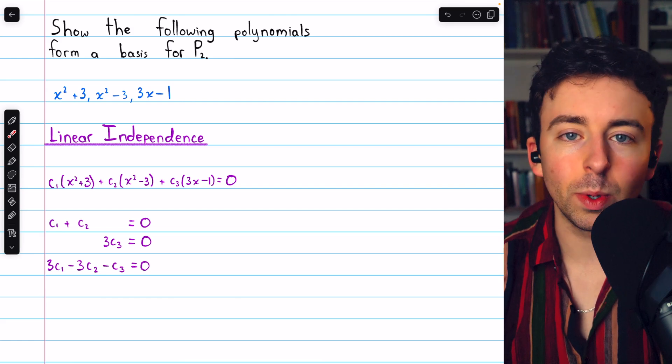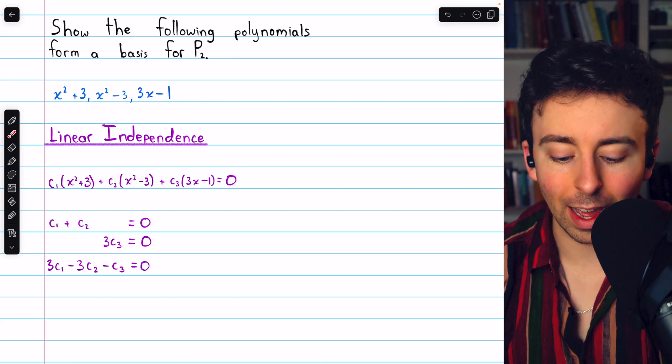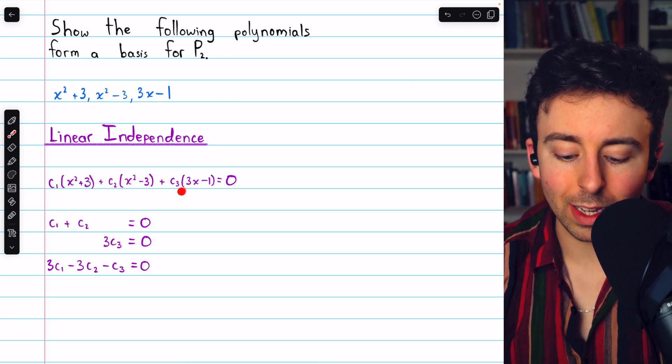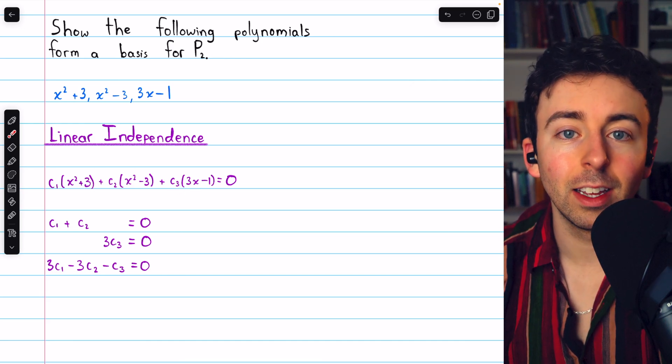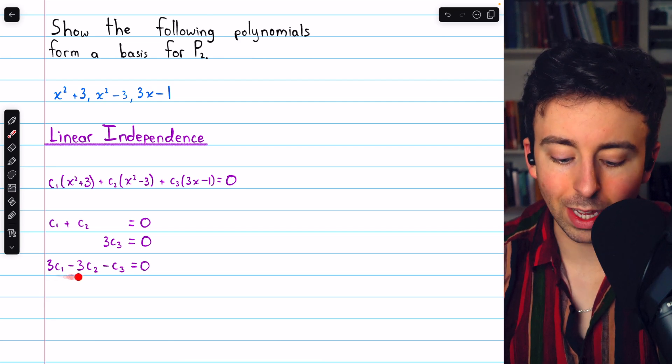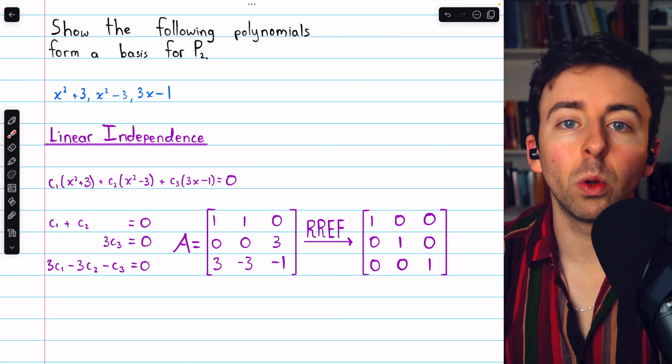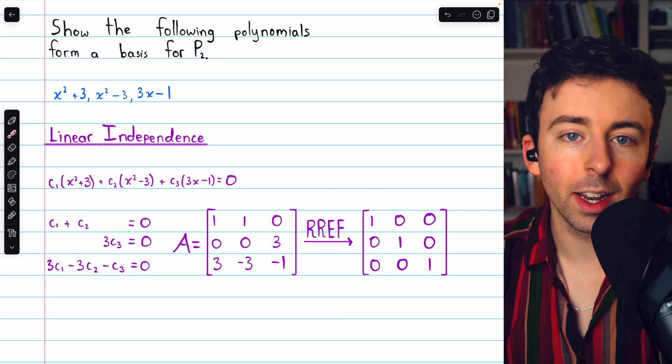How much of x do we have on the right? We have no x on the right. What about on the left? On the left, we have 3c3 times x. So 3c3 must equal 0. By equating constants, we get the third equation. So we need to check if this homogeneous linear system has only the trivial solution or not.